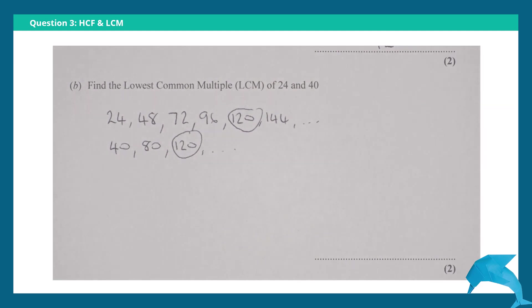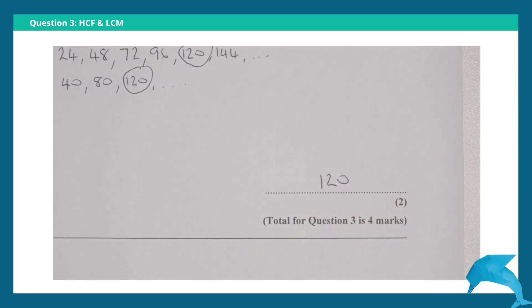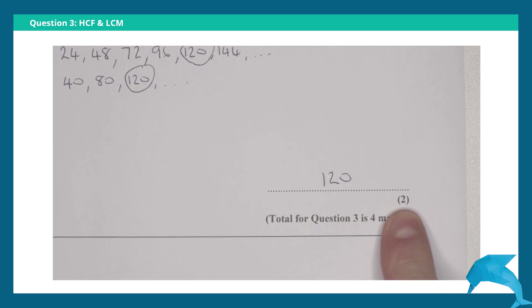is 120. So the lowest common multiple of 24 and 40 is 120 for 2 marks for part b. Total for question 3: 4 marks.